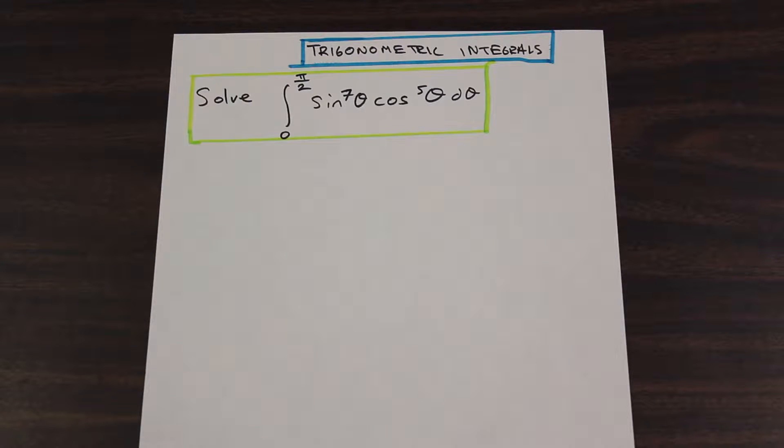This is Calc 2 stuff, early in Calculus 2 in university. It can be tricky, but honestly this is one of the easier sections of Calc 2, so there's no excuse not to get this. This is free marks. We have solve from 0 to pi over 2 of sine to the 7th theta times cos to the 5th theta d theta. There's three different scenarios that you have when you have trigonometric integrals, and this is one of them. We'll do questions on all three.